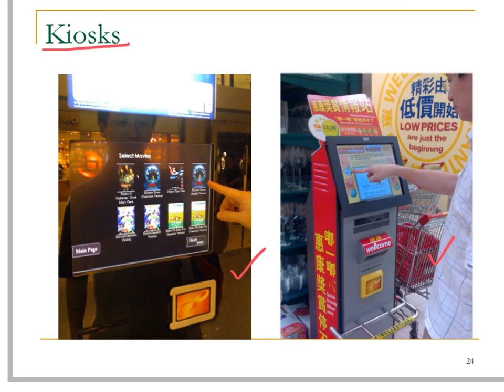Information can be displayed through the screen of a kiosk, or you can touch the screen to buy something — such as movie tickets or get some coupons from the supermarkets.